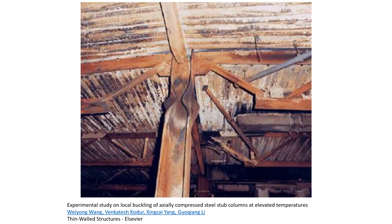Here's another image from an Elsevier publication showing a structure that was subjected to elevated temperatures — essentially a fire. You can see the column has failed in a local buckling mode, with sweep in the front and back flanges and rippling on both sides. At elevated temperatures the modulus of elasticity drops, and as E decreases so does the buckling strength, since local buckling is a function of E just like the Euler buckling strength for flexural buckling.